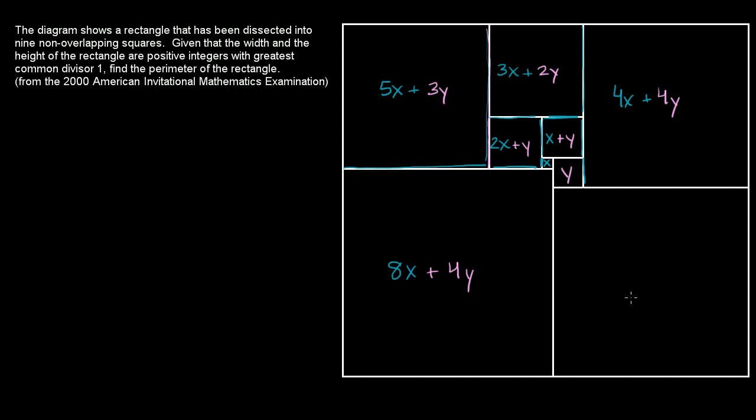And then finally, we have this square right over here. Its dimensions are going to be the y plus the 4x plus 4y, so that's 4x plus 5y. And then if we think about the dimensions of this actual rectangle, if we think about its height, that's going to be 5x plus 3y plus 8x plus 4y, so 13x plus 7y.